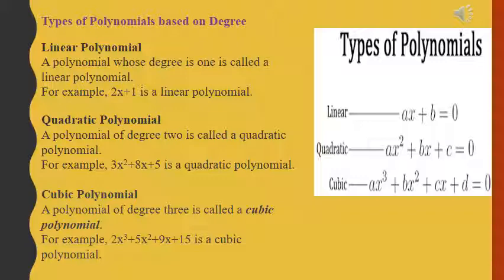A polynomial having degree 2 is called a quadratic polynomial — for example, 4x squared plus 2x plus 5. The last type is a polynomial having degree 3, called a cubic polynomial — for example, 2x cubed plus 5x squared plus 5x plus 15.